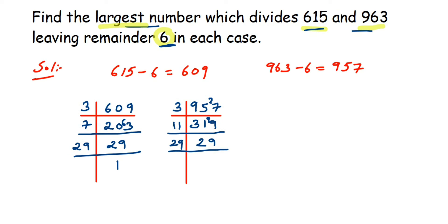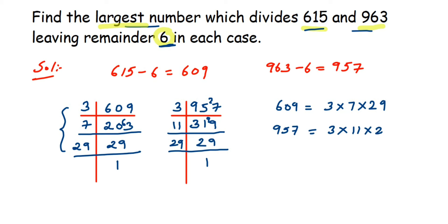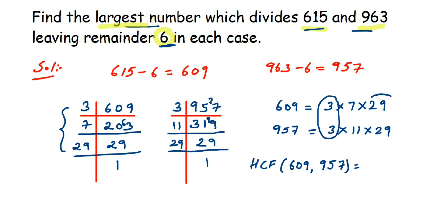That leaves 29, and 29 times 1 is 29. So we can now write out all the factors: 609 equals 3 × 7 × 29, and 957 equals 3 × 11 × 29. To find the HCF, we circle the factors present in both: 3 is in both and 29 is in both. We take those common factors and multiply them: 3 × 29 equals 87.